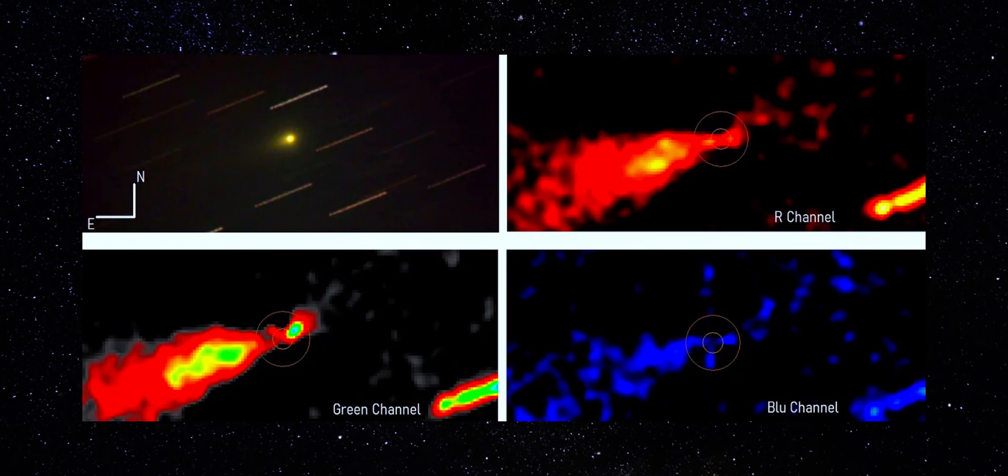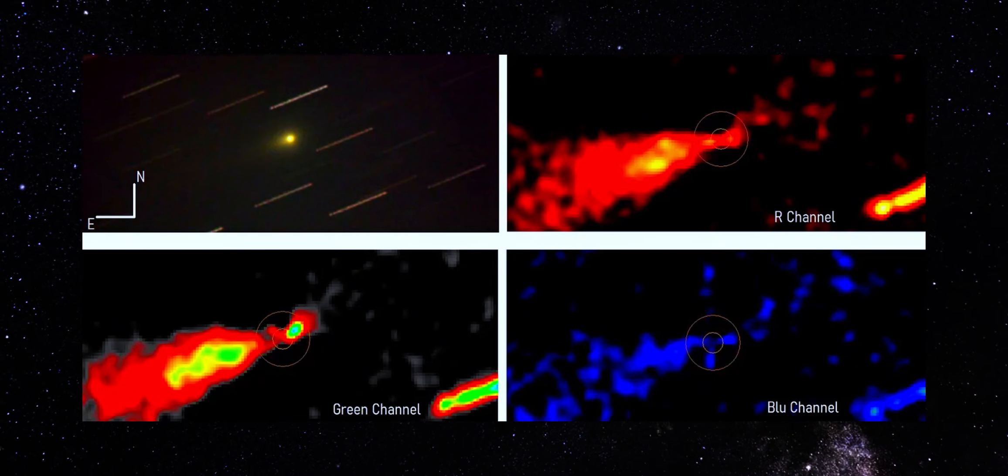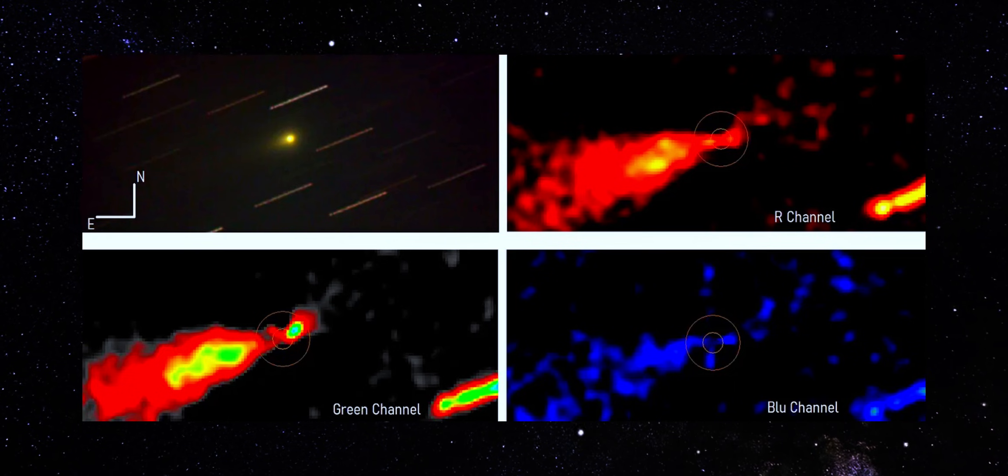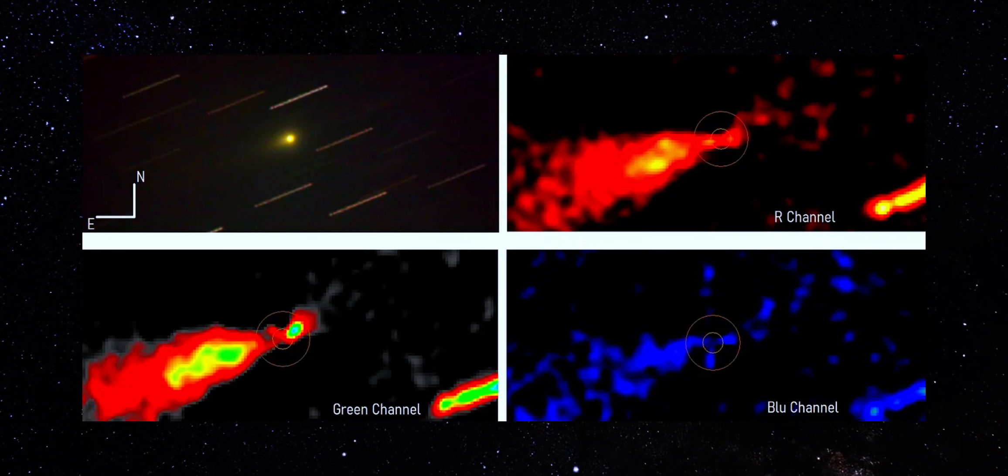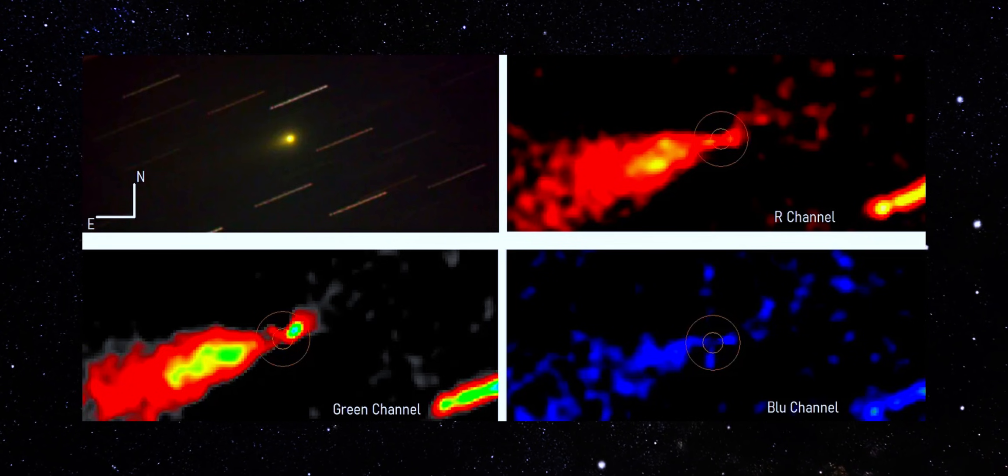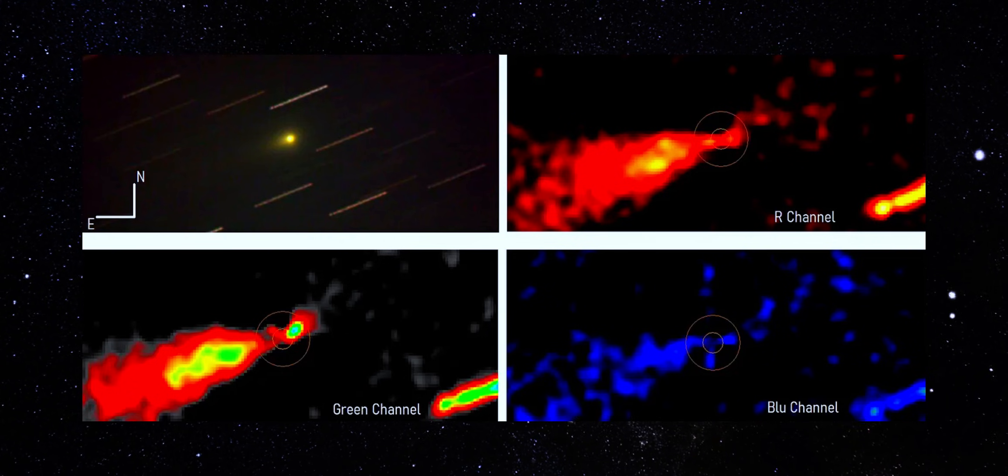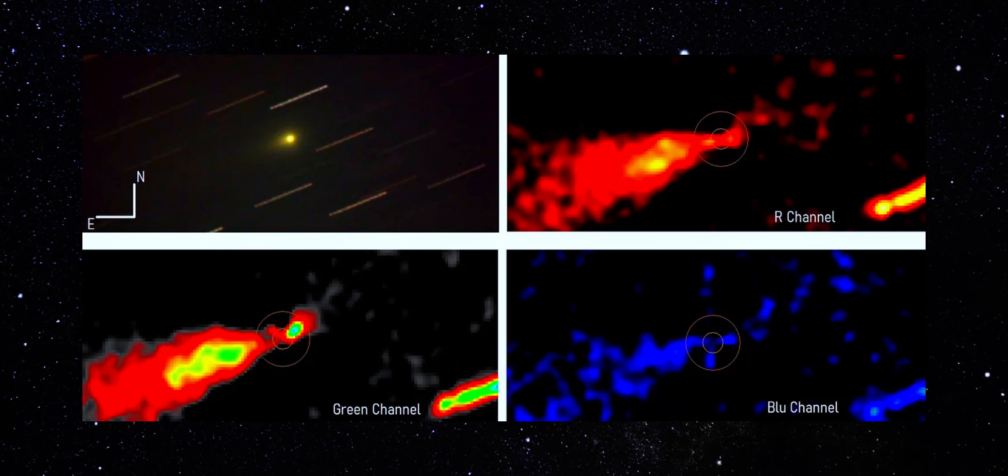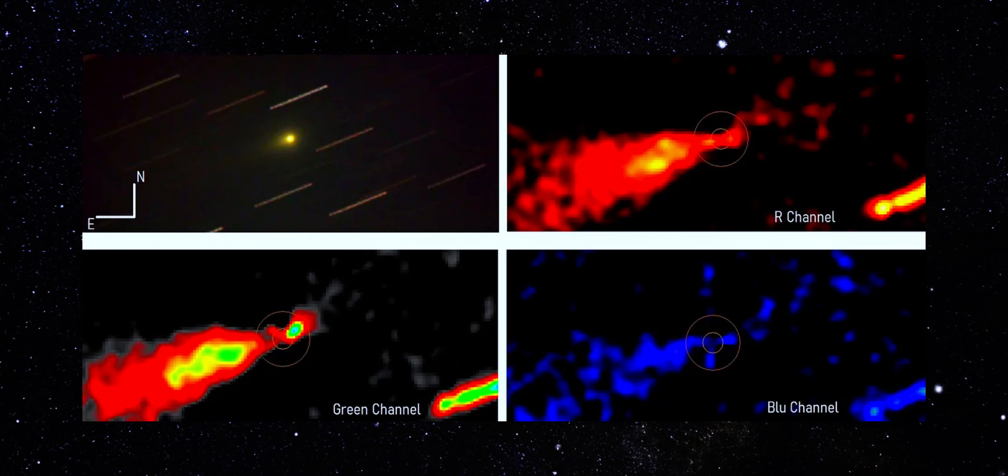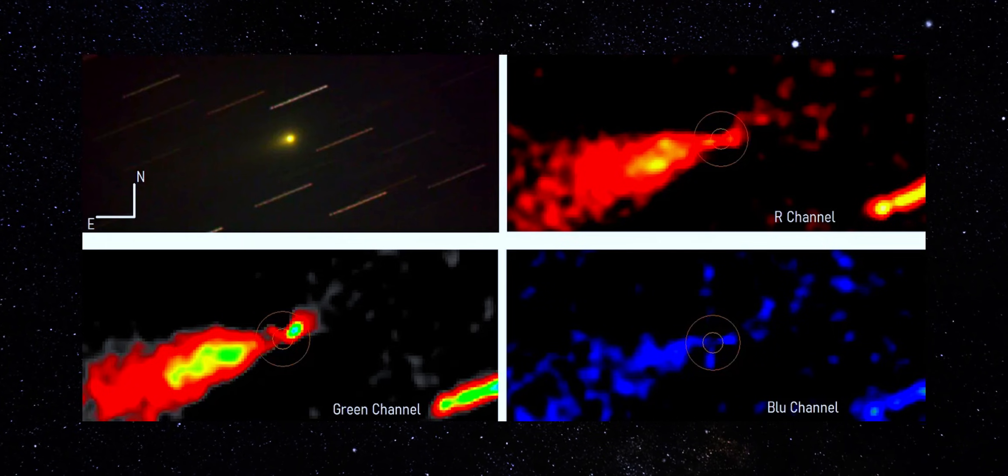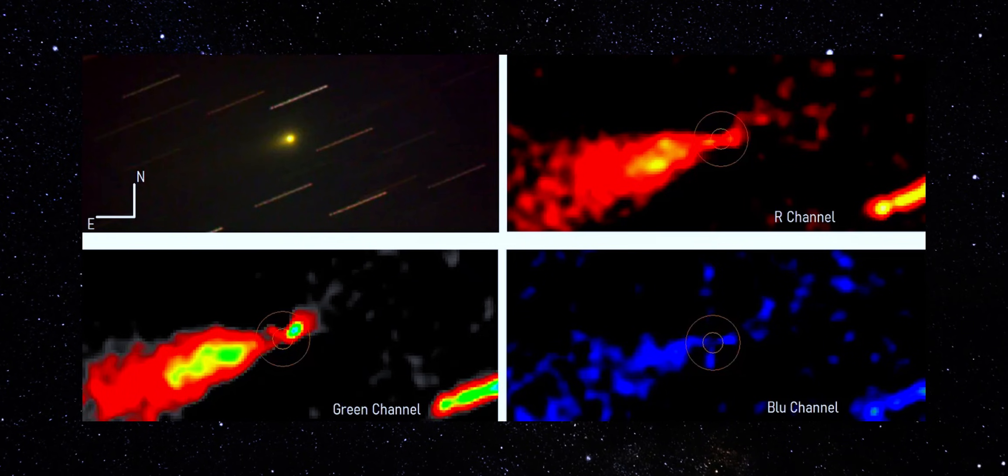And here's the scale that matters. At this distance, one pixel corresponds to roughly 3,850 kilometers. This isn't a tiny artifact. This is a large-scale feature extending tens of thousands of kilometers from the core. When a structure survives stacking, survives channel separation, and survives aggressive filtering, it stops being a processing curiosity. It becomes behavior.